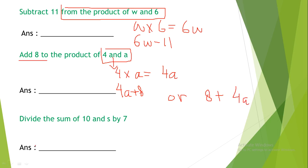Divide the sum of 10 and s by 7. So you have to find out the sum of 10 and s first: 10 plus s. Then you divide the answer by 7.